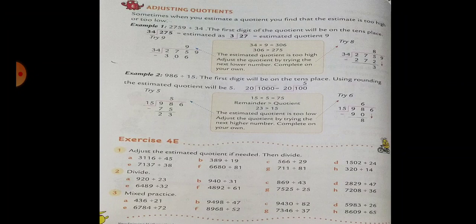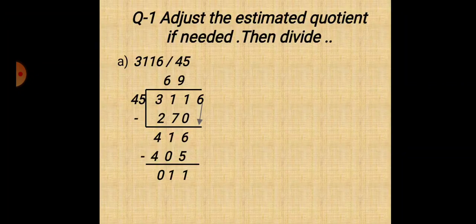Now, exercise 4E: adjust the estimated quotient if needed, then divide. A: 3116 divided by 45.